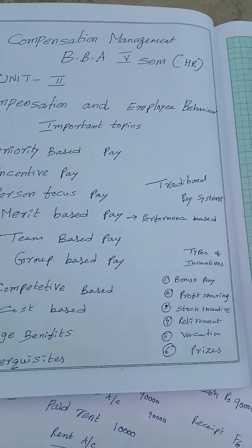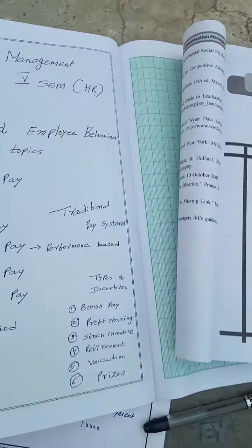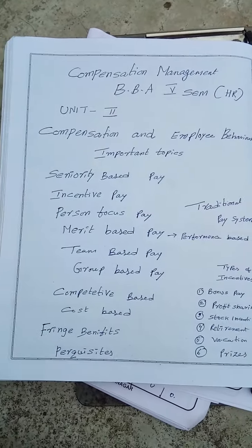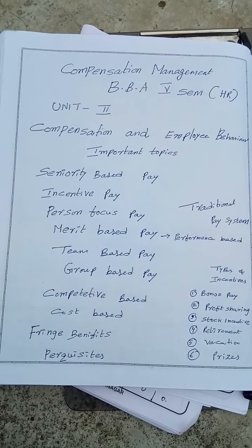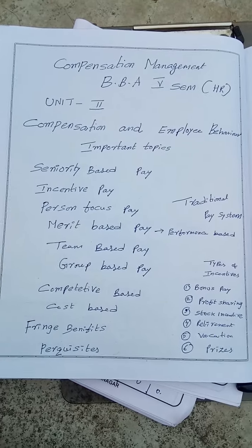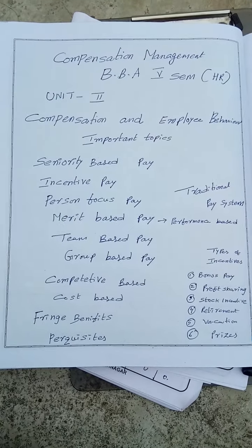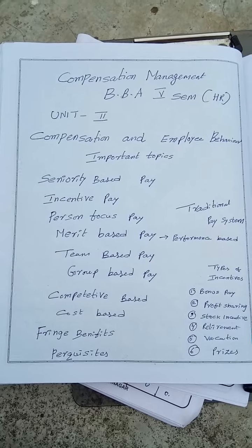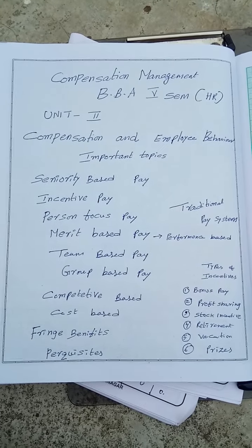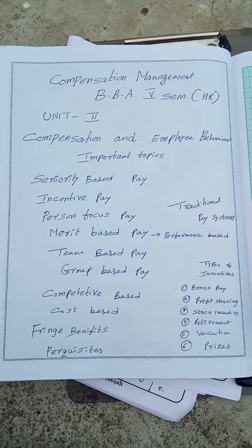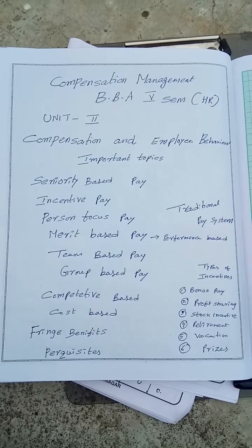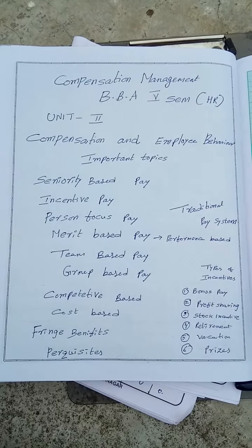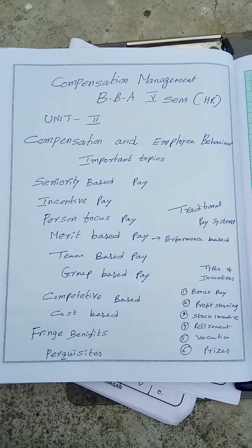You should thoroughly go through the topics which are there in unit number two. Under the traditional pay system, to the employees of the organization, we used to pay basic pay, then DA (dearness allowance), then HRA. Together with that, some more allowances like CCA we used to give. That is said to be a traditional pay system.